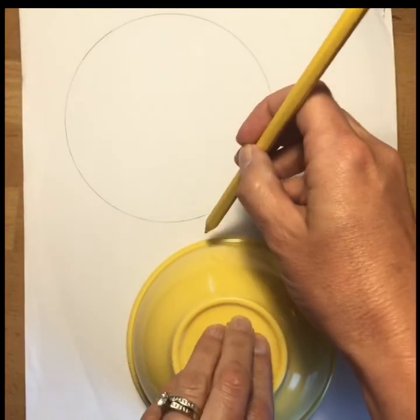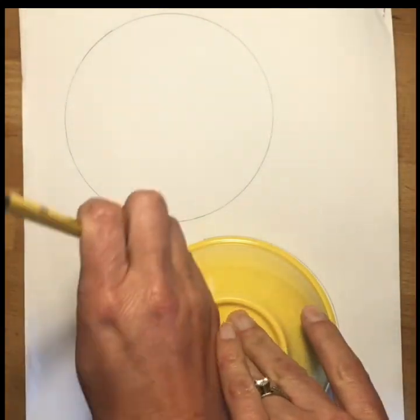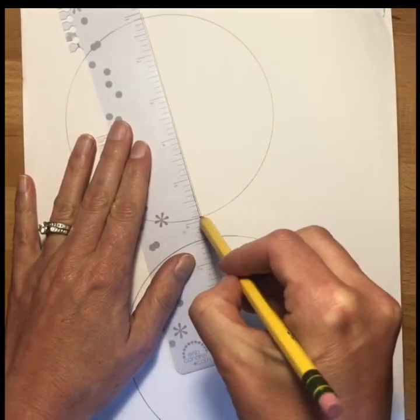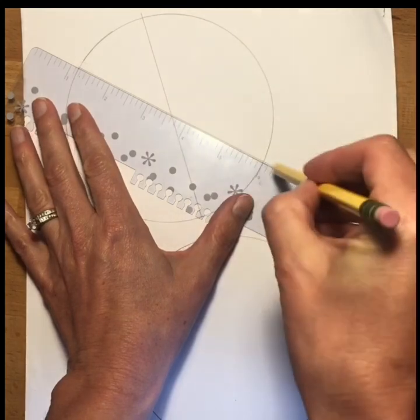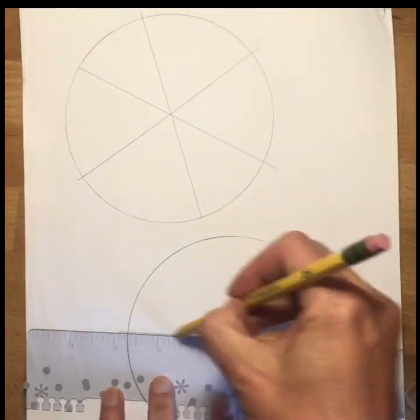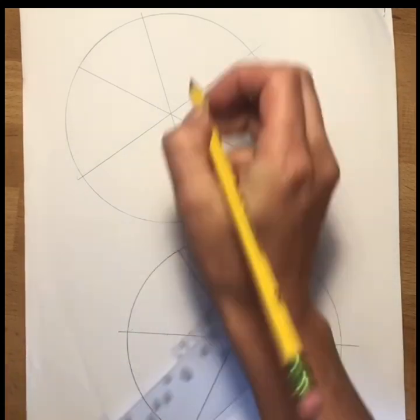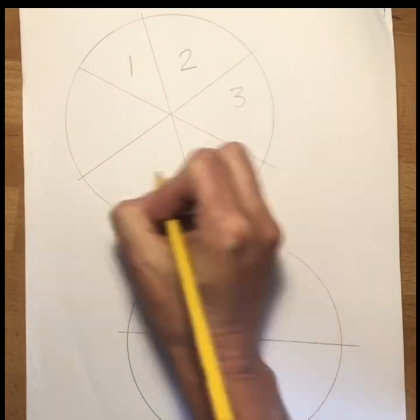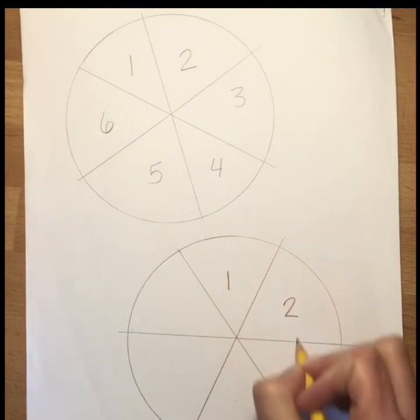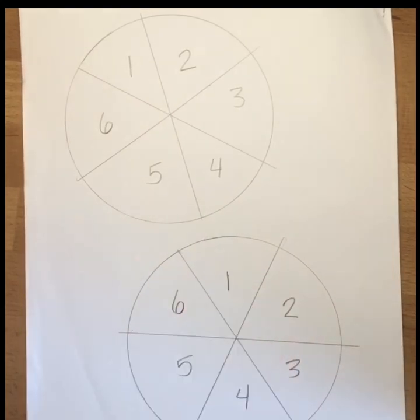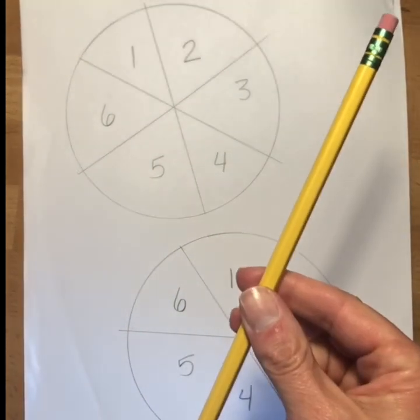...trace circles on a piece of paper. Next, grab a ruler and divide the circle into six areas. I did six because a die has six sides. I then labeled each area one through six. For your spinner, use a...